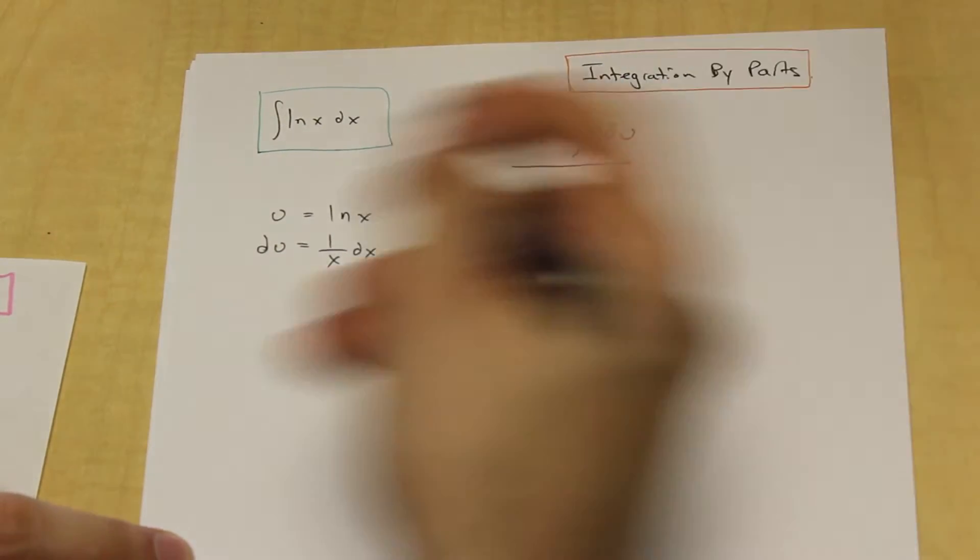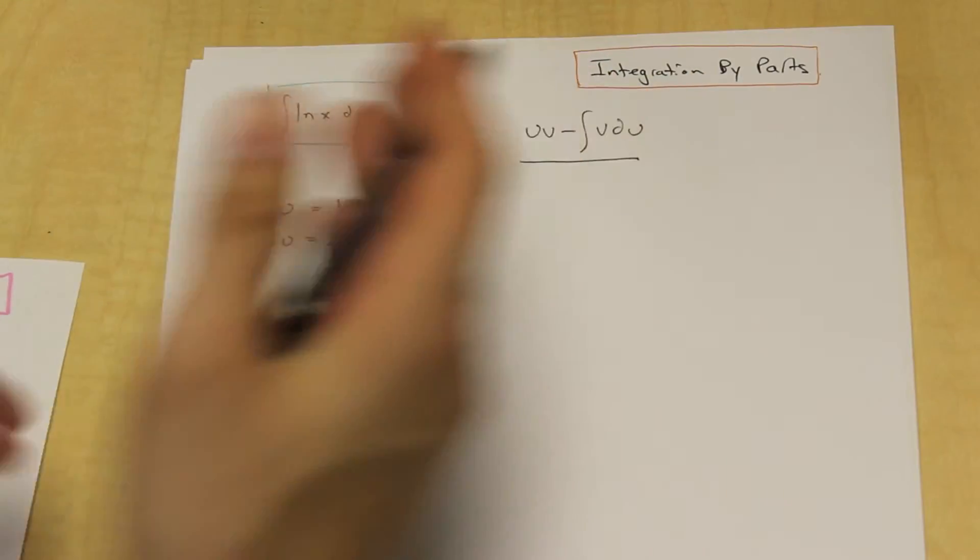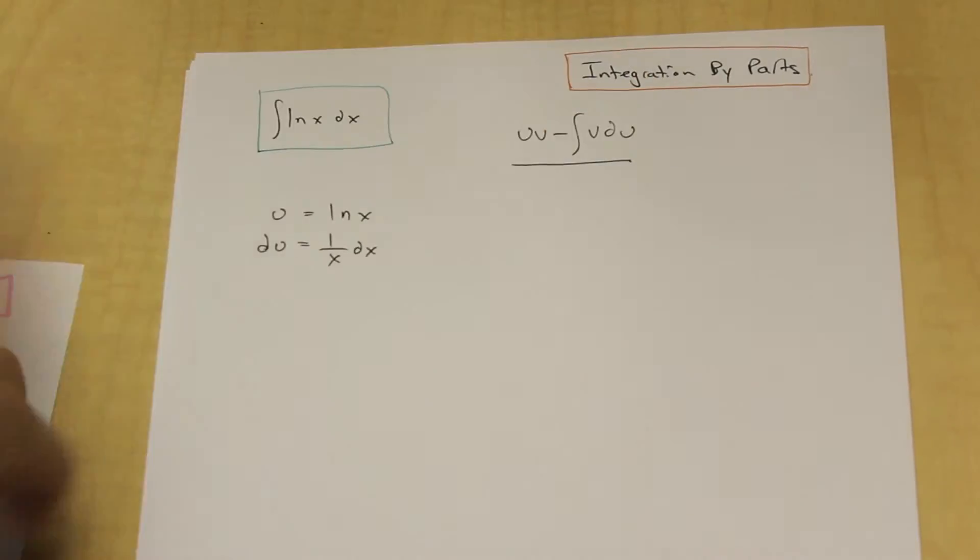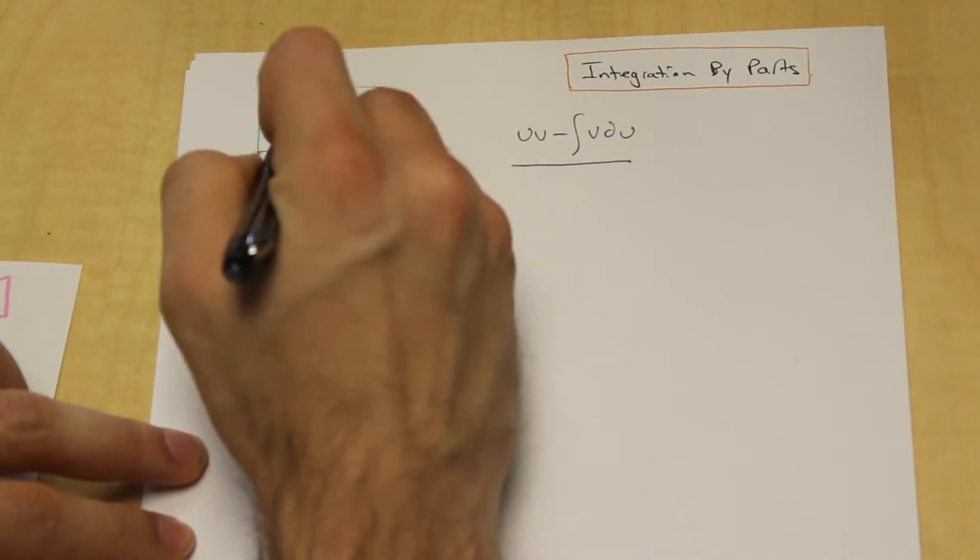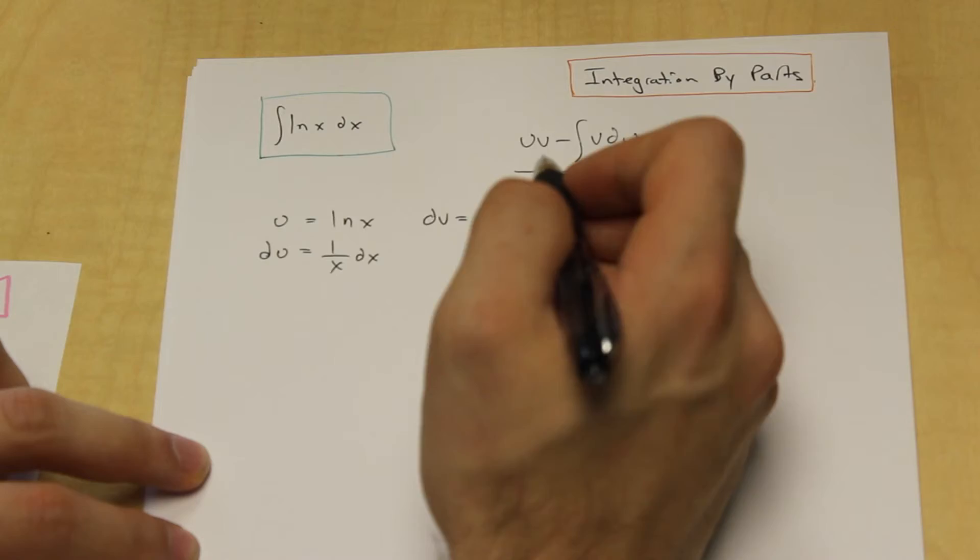So now, by default, the other half of the product of what ln x is being multiplied by is our dv. And that's just dx here, because there's no other variable in the equation.